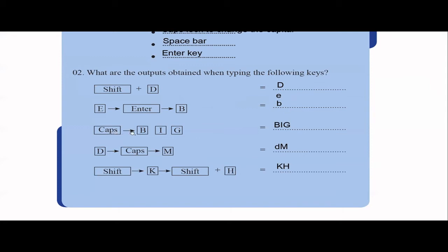Then you press Caps Lock and type B-I-G — all three letters should be capitals. Next, D should be simple lowercase. Then you press Caps Lock so letter M and all letters after it should be capital. Here you press Shift and K so K should be capital. And Shift and H so that should be capital H. Note: there should be a plus sign indicating they're pressed together; otherwise if Shift and K are not pressed together, only simple K will appear. There's a small confusion here — check with your teachers and do accordingly.